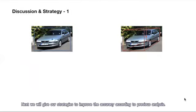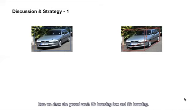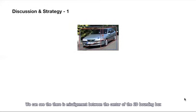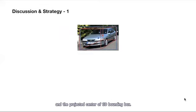Next, we will give our strategies to improve the accuracy according to previous analysis. Here we show the ground truth 2D bounding box and the 3D bounding box. We can see there is a misalignment between the center of 2D bounding box and the projected center of 3D bounding box. This misalignment should be aware in building the 3D detector.